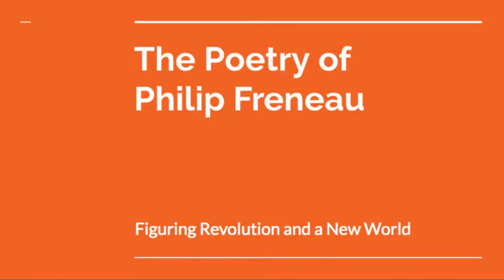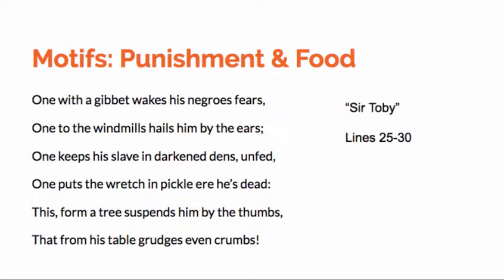Let's take a look at that first poem, 'Sir Toby.' I'm interested in particular in lines 25 through 30, because I think this gives us a really good example of motifs and what they are and how they operate.